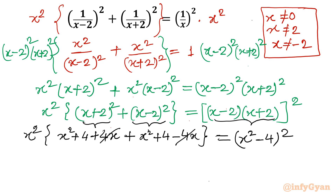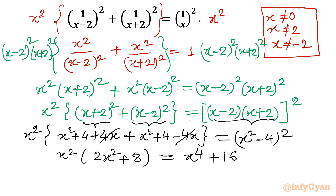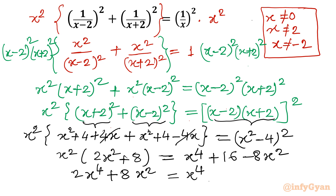The 2ab terms on the LHS, which are minus 4x and plus 4x, cancel out. So the LHS simplifies to x squared times (2x squared plus 8). Expanding the RHS, (x squared minus 4) squared gives x to the power 4 plus 16 minus 8x squared. Combining everything, the equation becomes 2x to the power 4 plus 8x squared equals x to the power 4 minus 8x squared plus 16, which simplifies to x to the power 4 plus 16x squared minus 16 equals 0.